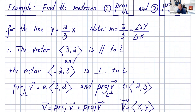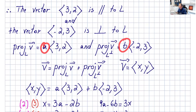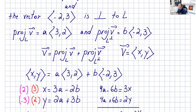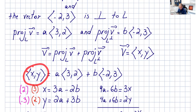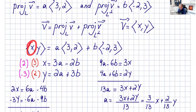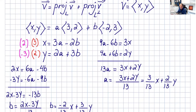The projection of v onto L is any scalar multiple of (3, 2), so we write it as a times (3, 2). The projection of v onto L perp is any scalar multiple of (-2, 3), written as b times (-2, 3), where a and b are constants. Since v equals proj_L plus proj_L_perp, we get (x, y) = a(3, 2) + b(-2, 3), so x = 3a - 2b and y = 2a + 3b.